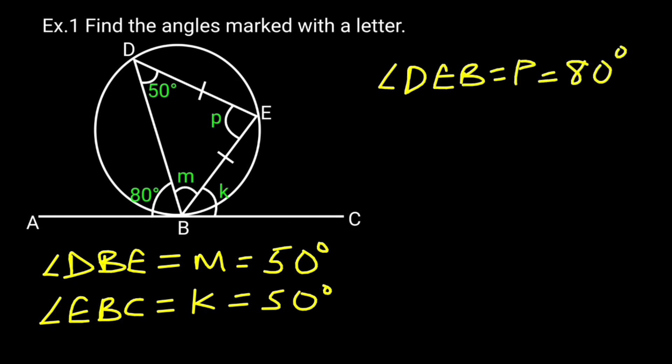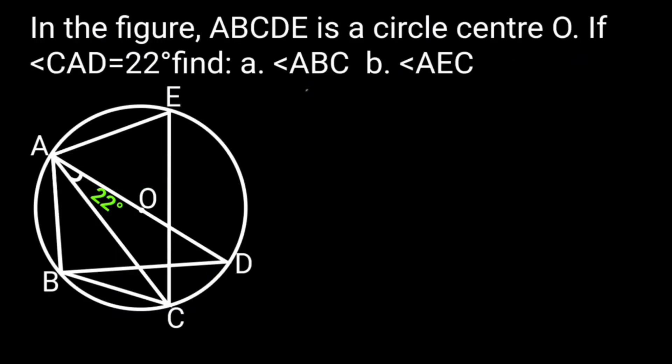Angle DEB, which is P, is equal to 80 degrees. Reason: Also angle in alternate segment. In the figure, ABCDE is a circle center O.